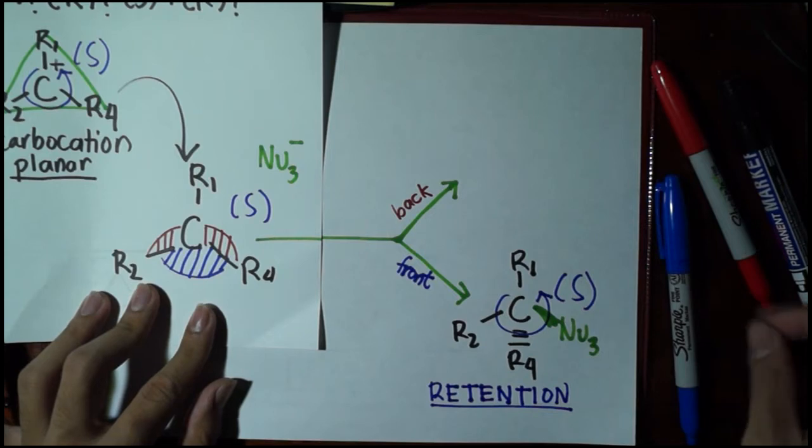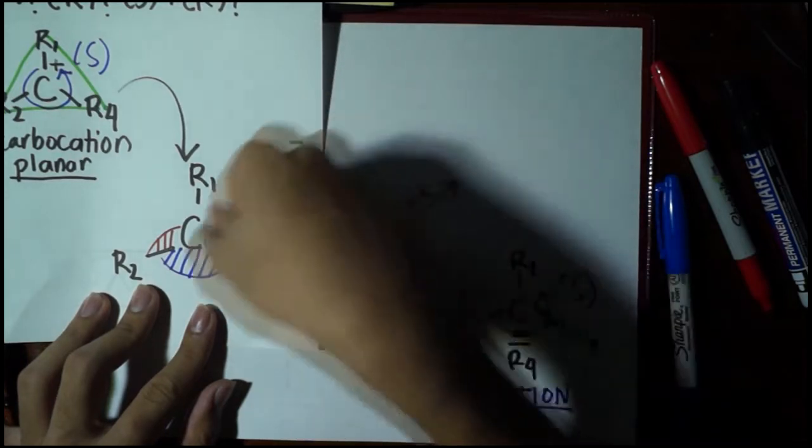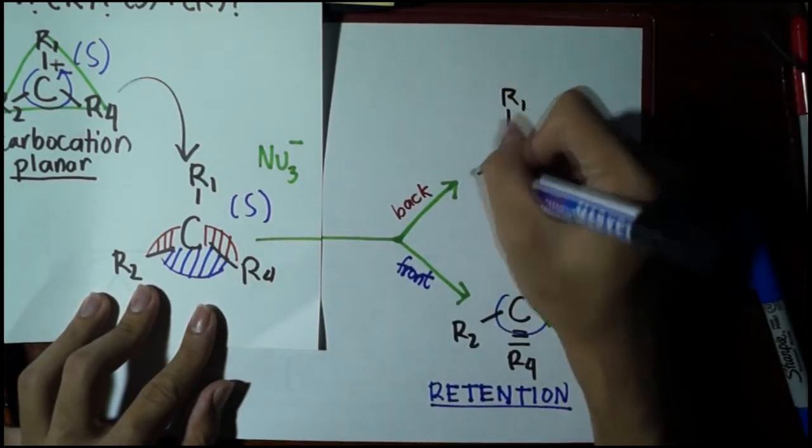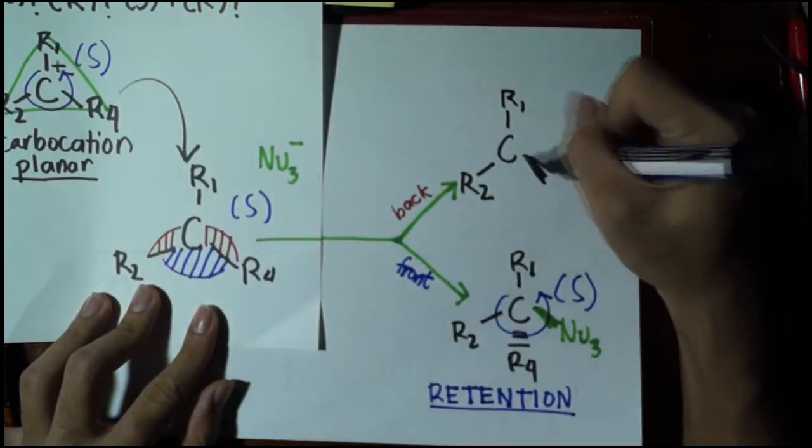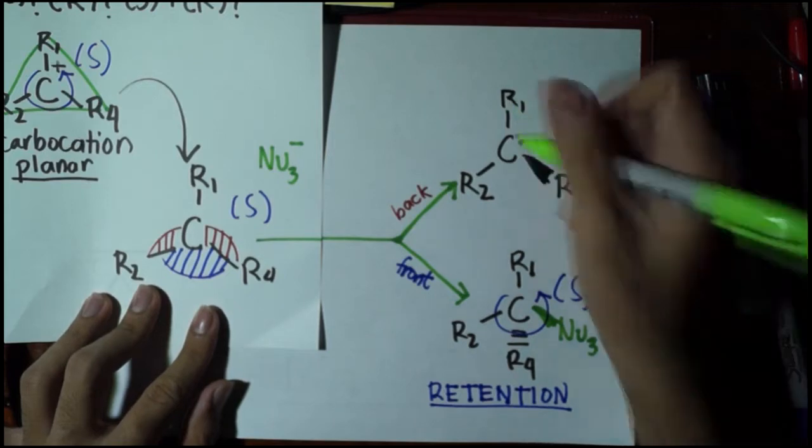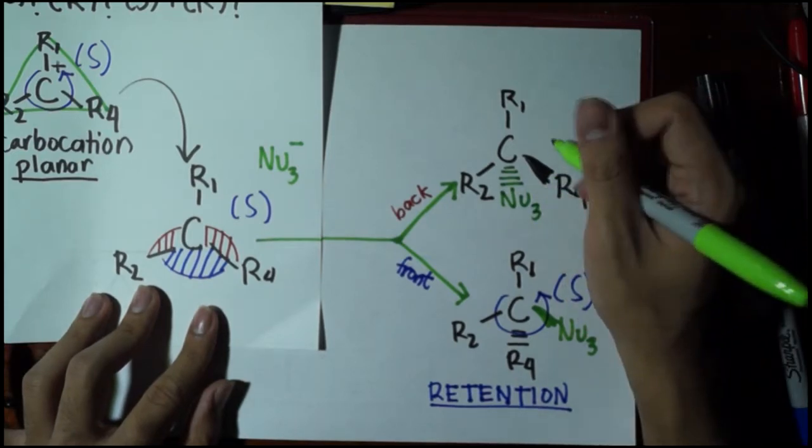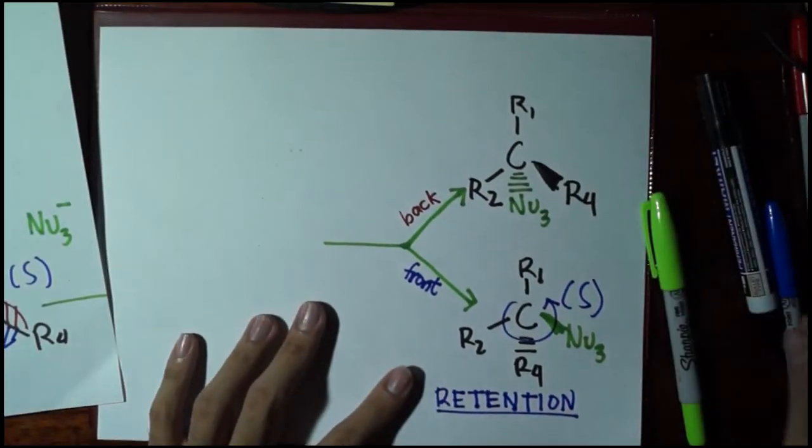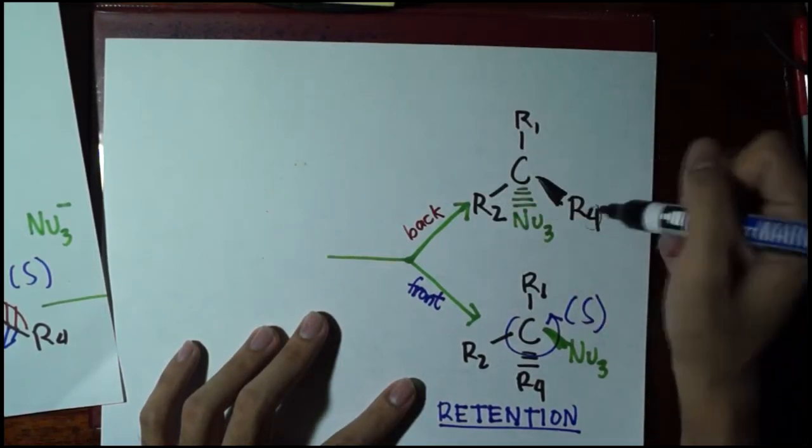But if we attack the back, what happens? If the nucleophile attacks the back, will R4 be moved? No. Since the nucleophile will attack at the back, R4 will remain in front. This was 2D, now this becomes 3D. So R4 will be further pushed forward. It will now become a wedge instead of just being a flat line, and the nucleophile will assume the position at the back.